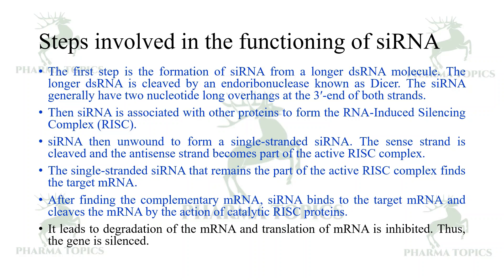This cleavage leads to the degradation of the target mRNA, which would otherwise produce proteins related to several diseases. The mRNA is degraded before it can bind to ribosomes and form faulty proteins. As a result, translation of the target mRNA is inhibited — this gene silencing is the primary function of small interfering RNA.